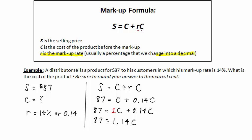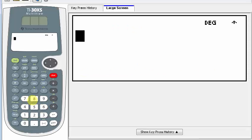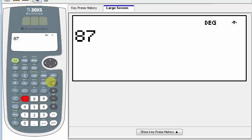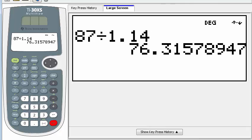And now we can easily solve for the cost by dividing each side by 1.14. And again, we're going to round to the nearest cent. So dividing 87 by 1.14. I'll go to my calculator and get 87 divided by 1.14. And this gives me 76.31578947.